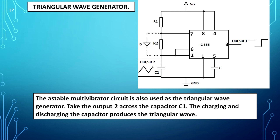The astable multivibrator circuit is also used as a triangular wave generator. By taking the output across the capacitor C1, the charging and discharging of the capacitor produces a triangular wave.